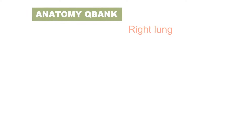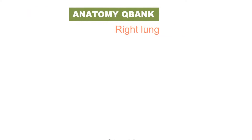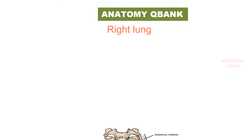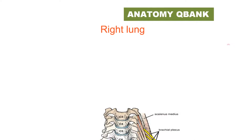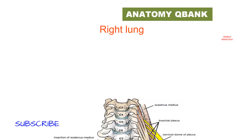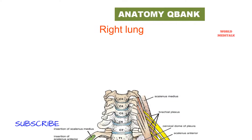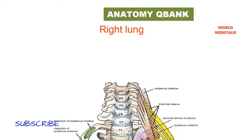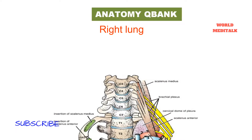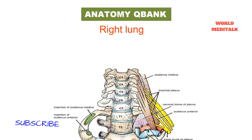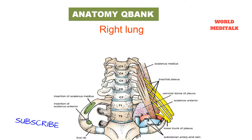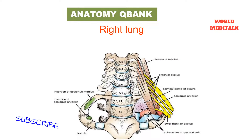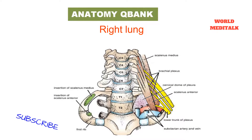Right lung: above the hilum is the azygous vein. Superior to this is the groove for the superior vena cava and the right innominate vein. Behind this and nearer the apex there is a furrow for the innominate artery.